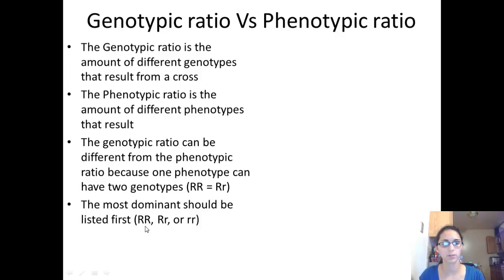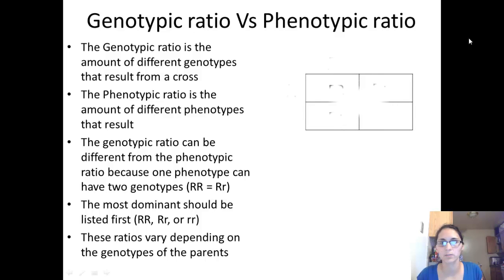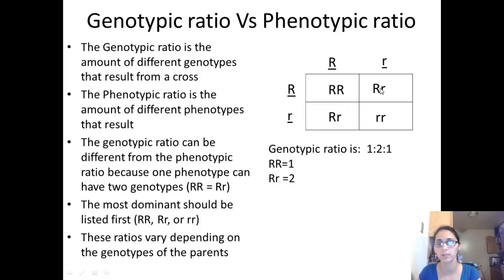The most dominant genotype should be listed first when writing ratios. So we start with the homozygous dominant, then the heterozygous dominant, then the homozygous recessive. For the ladybug cross, the genotypic ratio is 1:2:1 — one homozygous dominant, two heterozygous dominant, and one homozygous recessive. These ratios will vary depending on the genotypes of the parents.